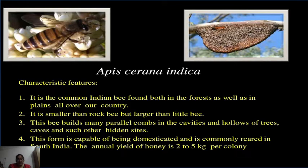It is smaller than the rock bee but larger than the little bee. This bee builds many parallel combs in the cavities and hollows of trees, caves and such other hidden sites. It is capable of being domesticated and is commonly reared in South India. The annual yield of honey is very low — 2 to 5 kg per colony. It is among the best Indian variety to be reared in artificial conditions.